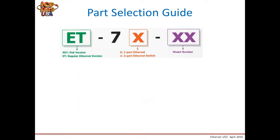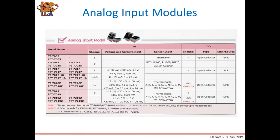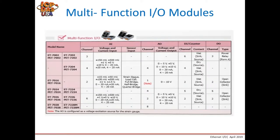Here's the part number breakdown for the ET-7200 series and the currently available model numbers. The first column shows ET and PET series with single Ethernet ports; the second column shows dual Ethernet port models. We have models supporting thermocouple, RTD, and thermistor inputs, some with additional digital output channels for alarms. We also have multifunction modules with analog input, analog output, digital input, and digital output combinations, available in both single and dual Ethernet port versions.